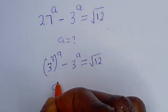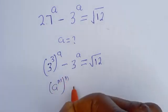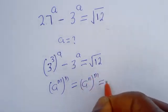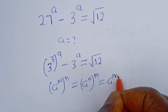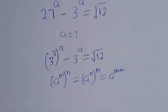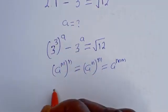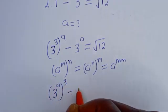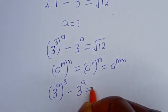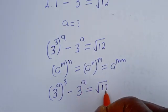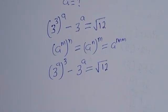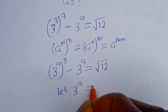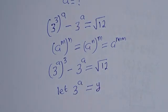Take note that if you have a base to the power of m, to the power of n, this is equal to the base to the power of m times n. So 27 to the power of a can be written as 3 to the power of 3, to the power of a. Then 3 to the power of a equals y as our substitution target.